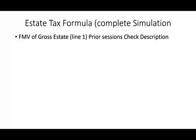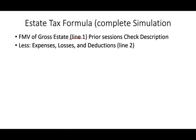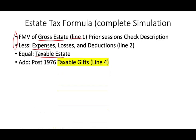Let's go through the estate tax formula, which is the fair value of gross estate — line one — minus the deductions, expenses, and losses on line two. If you want to see the lectures for line one and line two plus examples, see the link below in the description. Those will give you taxable estate. We're going to add to the taxable estate any taxable gift, and that gives us the estate tax basis. The estate and gift tax are added together because they are practically the same thing.